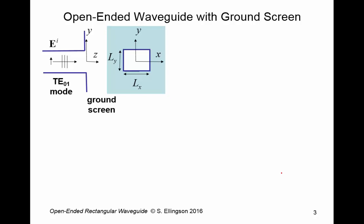Okay, so here's the first problem. Open-ended waveguide with a ground screen. So here I'm showing a rectangular waveguide. It is bearing a TE01 mode. This is the lowest order mode that such a waveguide would carry. I'll say what it is mathematically in a moment. And it's opening up into a ground screen.